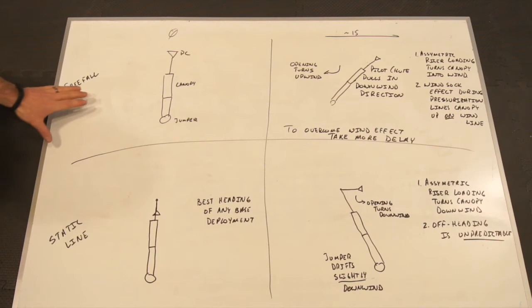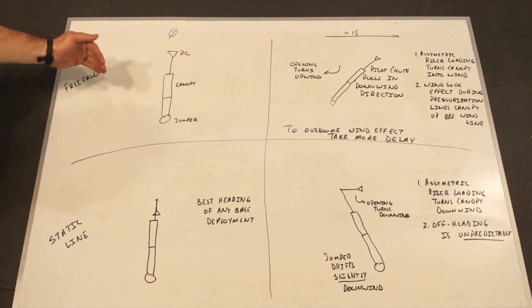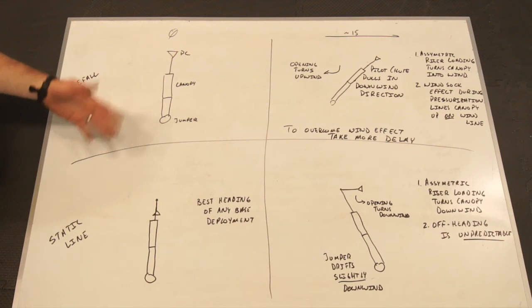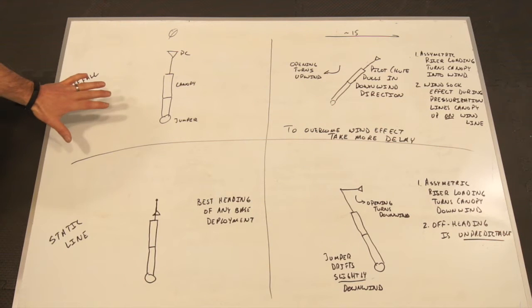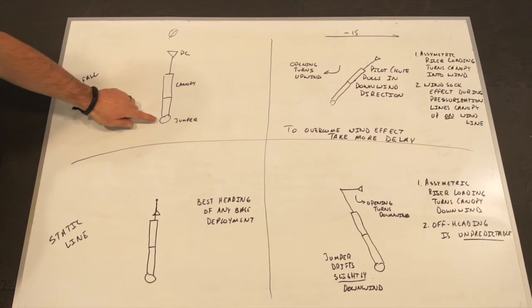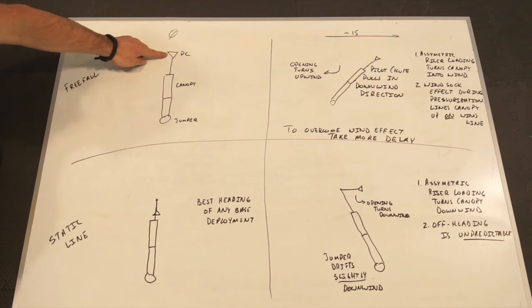Let's talk about what happens during that deployment. On this board I've drawn a simplified diagram of 4 different deployment cases. We're talking about free fall deployments on the top, static line deployments on the bottom, zero wind on the left side, crosswind on the right side. I'm going to say the crosswind is around 15 miles an hour, but just some crosswind. The overall magnitude is not very important. In these somewhat crudely drawn diagrams, this circle down here is our jumper, then we've got the lines and risers. This square is the canopy extracting, and that triangle is the pilot chute pulling straight out.